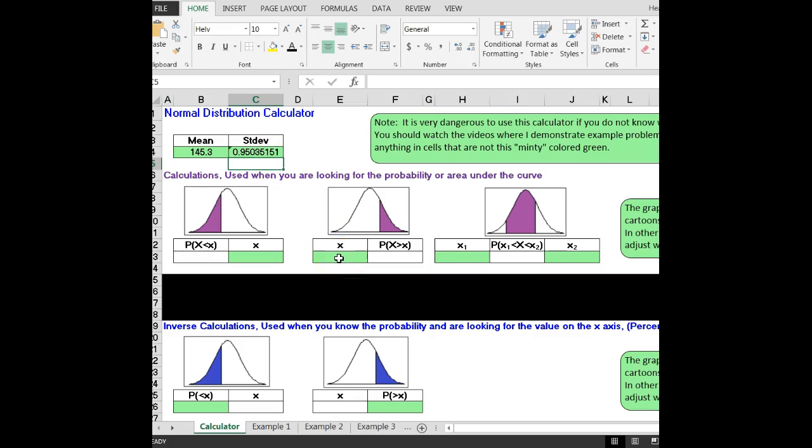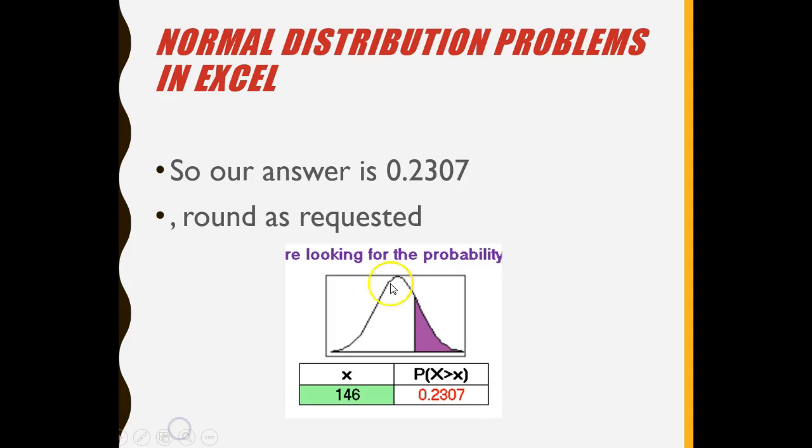I want to find the probability that the mean for this sample is greater than 146. Remember probability greater than is this one in the middle. 146. Boom. The answer is 0.2307. That's the probability that the sample mean would be greater than 146. I got an extra bullet there. I'm kind of like Barney Fife. So my answer was 0.2307.